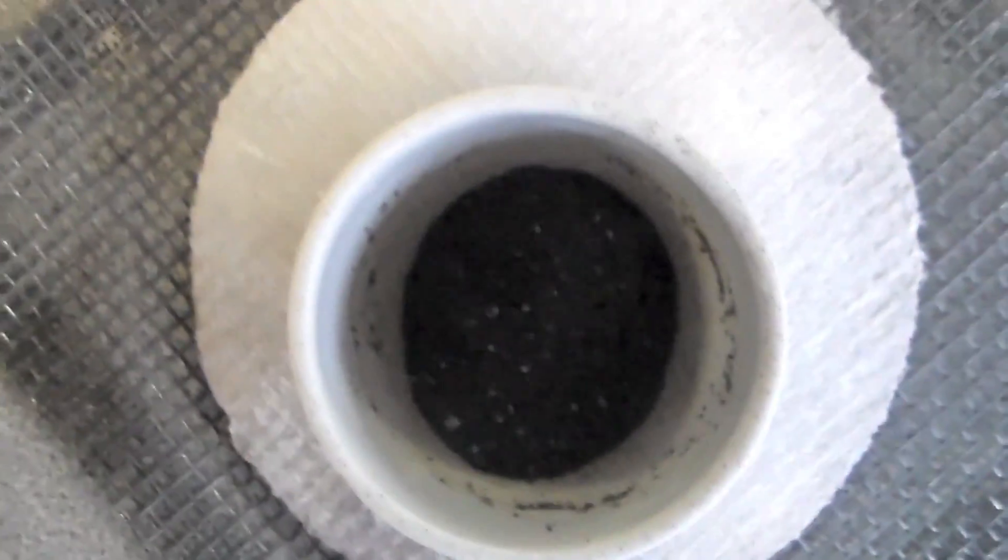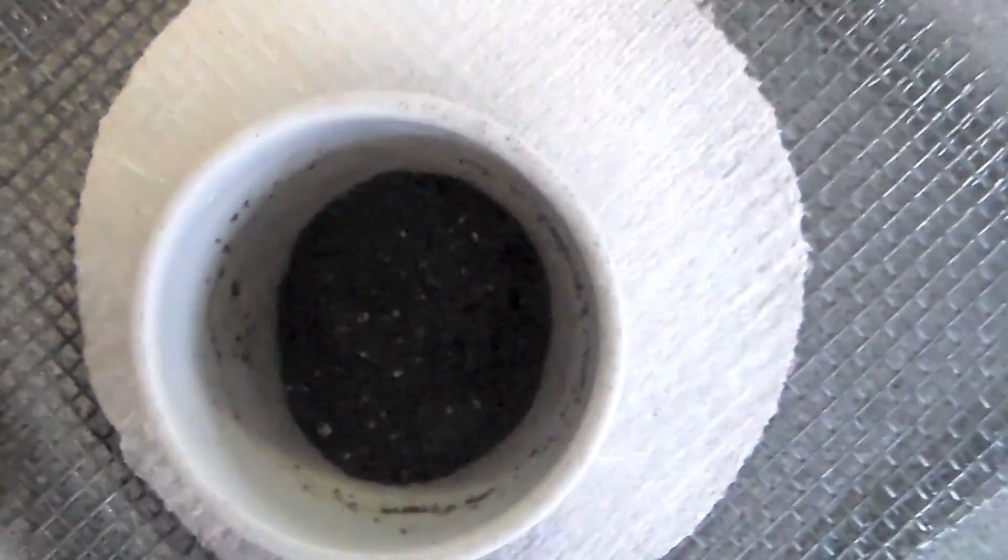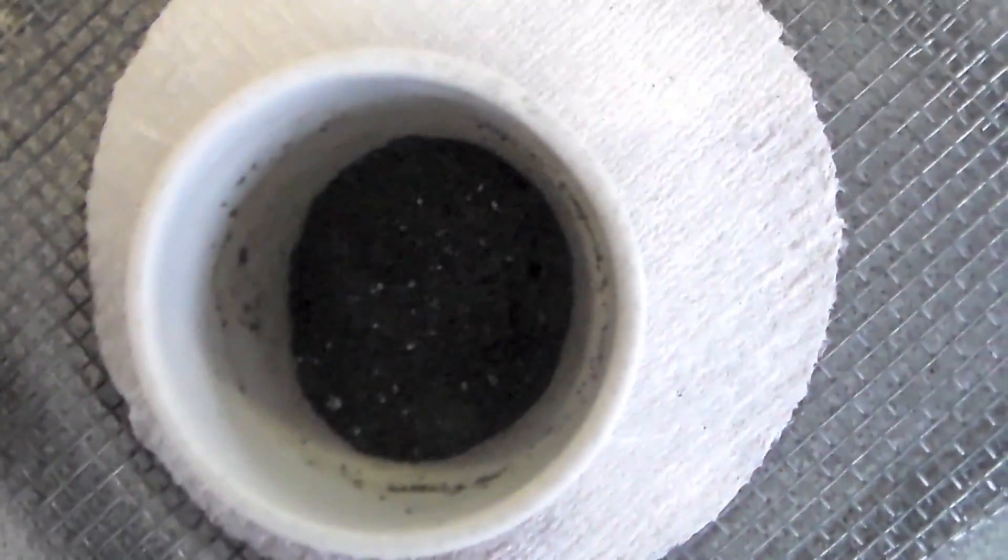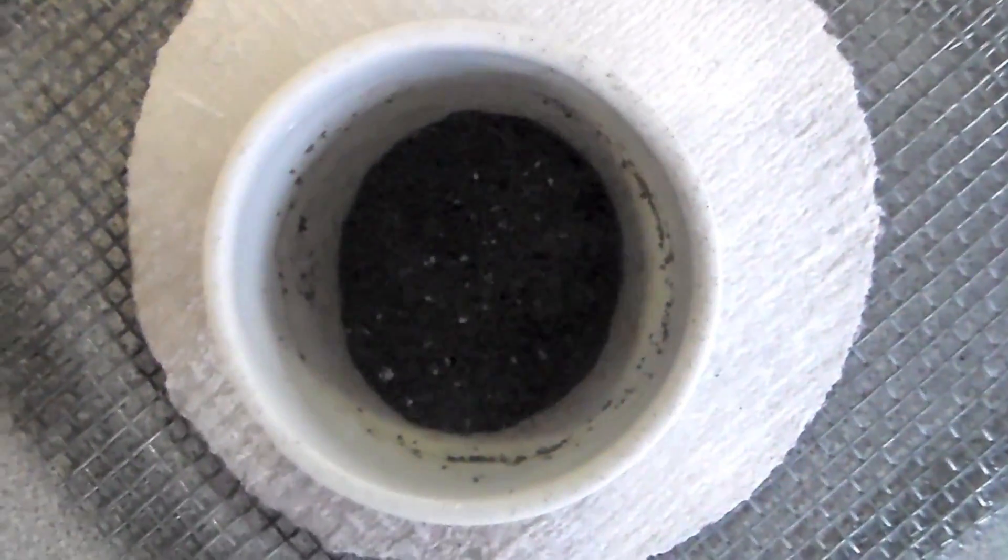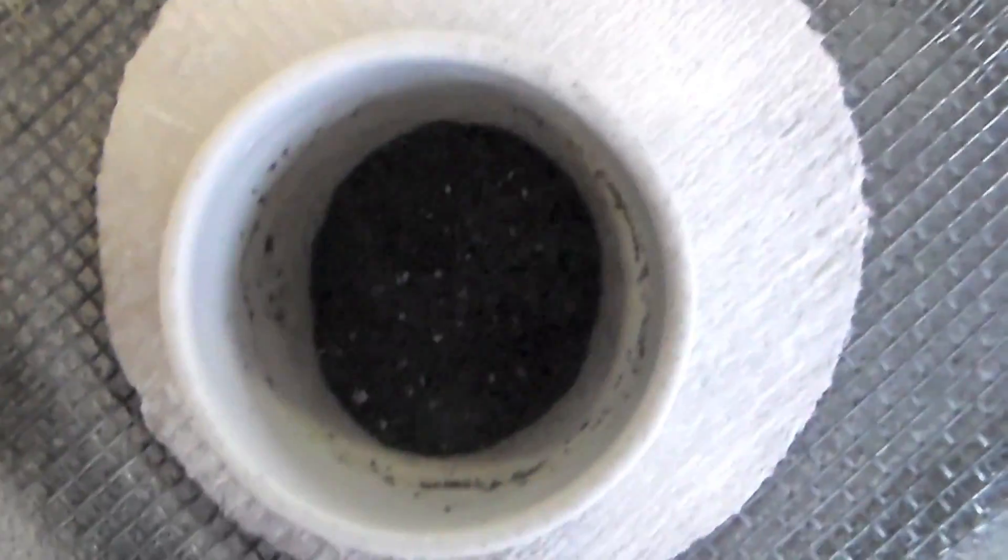It is obvious that it is impure because of the over 100 percent yield, and also there are a bunch of white flakes mixed in with the black powder. This is most likely unreacted sand. Now I'm not worried about removing the sand because it shouldn't affect the synthesis of silicon tetrachloride.